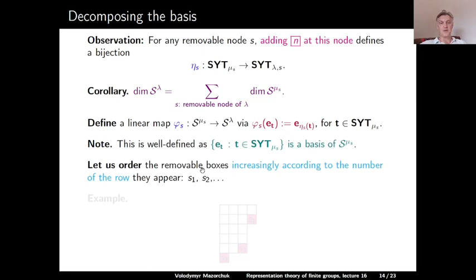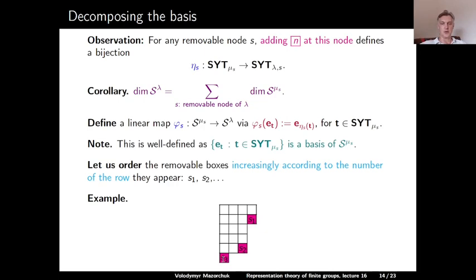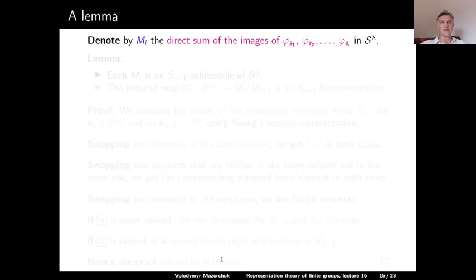We define a linear map phi_S from the Specht module S^{mu_S} to S^lambda by sending polytabloid E_t to the polytabloid E indexed by eta_S(t), where T is a standard Young tableau of shape mu_S. This is well defined since polytabloids indexed by standard Young tableaux of shape mu_S form a basis. We order the removable boxes in lambda increasingly by row number. In our example of partition 4,4,3,3,3,2, there are three removable nodes: S_1 in the second row, S_2 in the fifth row, S_3 in the sixth row.